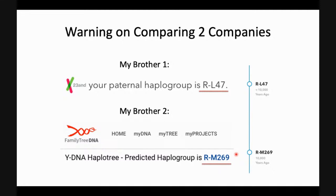Sometimes haplogroups were named with alphanumerics — meaning letters and numbers — which became very complicated. Everyone has since adopted the current naming system. But if you're looking at scientific literature or older materials, say you tested your brother and printed the results ten years ago, it might still have that alphanumeric naming. You can always go online and Google that alphanumeric to see what it would be called today.